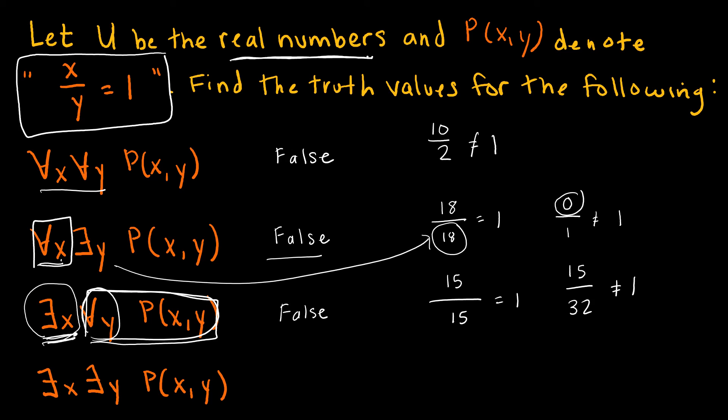For the last proposition: there exists some x and some y such that x divided by y equals 1. This is obviously true, because 13 divided by 13 equals 1. For 'there exists,' all we need to do is show that it is possible with one example.